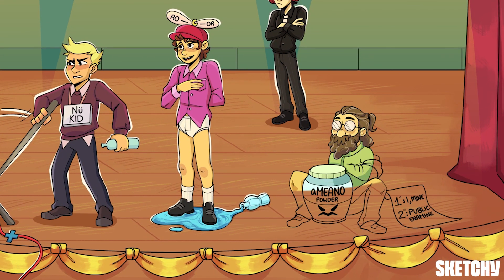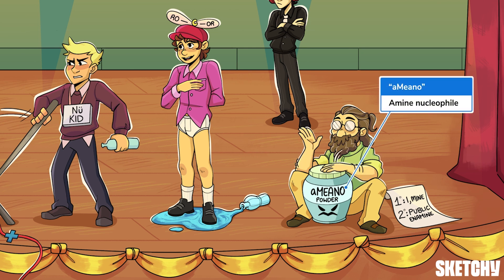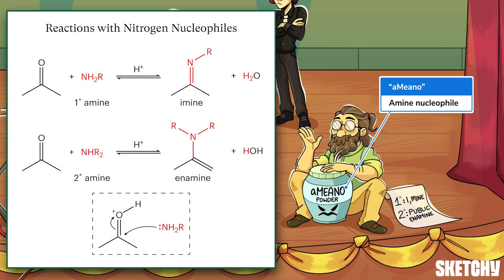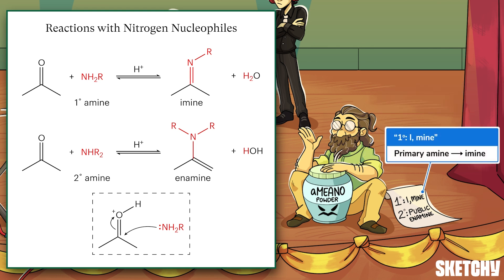Next, let's see what happens when an aldehyde or ketone reacts with an amine nucleophile, which uses nitrogen rather than oxygen to attack the carbonyl. The giant tub of amino protein powder that this resourceful drummer is jammin' on should remind you of amines. And his set list will tell you what happens with different types of amines. If the amine is primary, meaning it only has one R-group bound to the nitrogen, its two hydrogen atoms will be lost and an imine will be formed. An imine has a double bond between nitrogen and carbon, a lot like a carbonyl. The first song on the set list is 'I-mine' to help you remember that aldehydes and ketones react with primary amines to form imines.